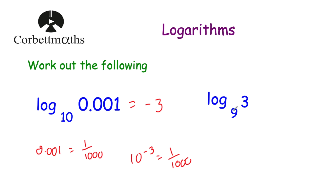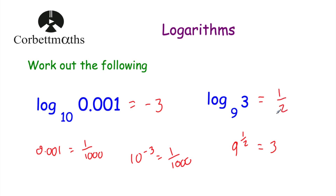This time we've been asked to work out log to base 9 of 3. What power would you raise 9 by to get to 3? Well, 3 is the square root of 9 — thinking back to your fractional indices, whenever you square root something, that's to the power of a half. So 9 to the power of a half is equal to 3. The answer is a half — log to base 9 of 3 is equal to one half.